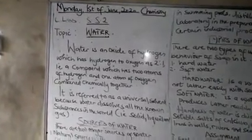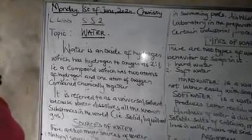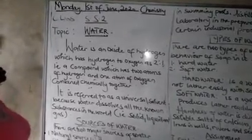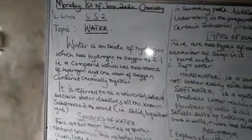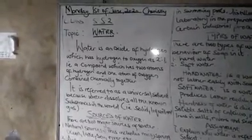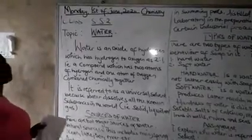Good day, my lovely students. Today we want to study a topic called water in chemistry, for SS2 class. The objectives of this lesson are that you should be able to explain the meaning of water, identify the sources of water, and also state the types of water we have in chemistry.